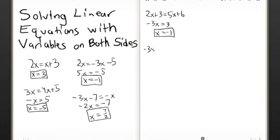Negative 3x minus 4 equals 7x plus 10. Same thing here — move the 7x over. Negative 10x equals 14, so x equals negative 14 over 10, which simplifies to negative 7 over 5.